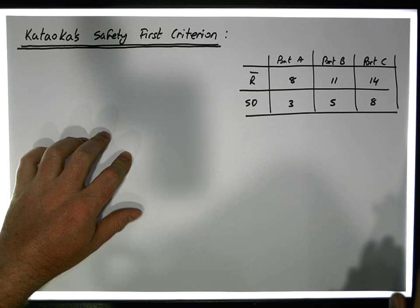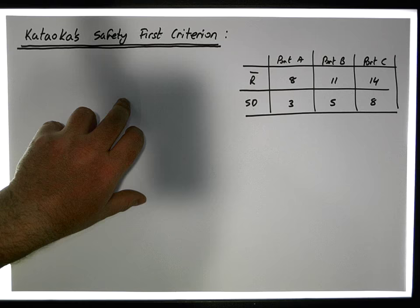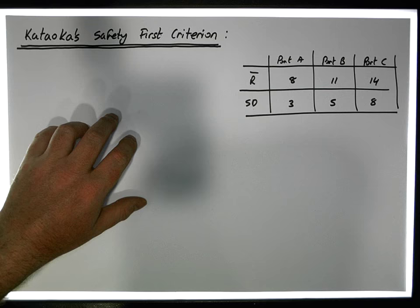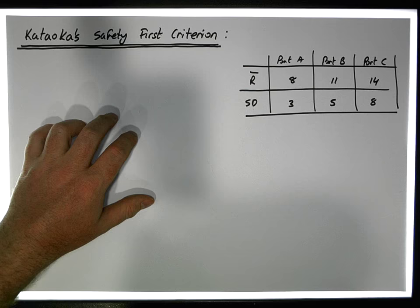With the Katoka Safety First Criterion, we're going to choose a specific risk level — defined as how much probability we place in the left-hand tail — and then select the portfolio that offers the highest minimum return consistent with that particular risk level.